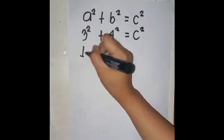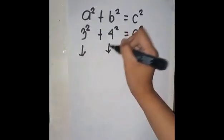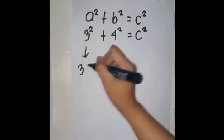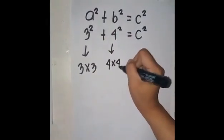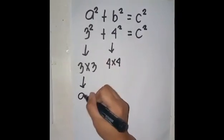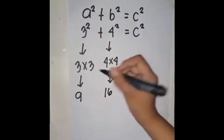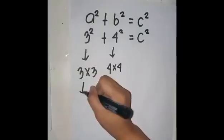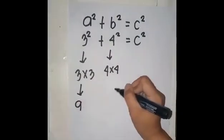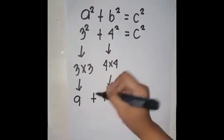Kung kaya't ang a squared ay magiging 3 squared at ang b squared naman ay magiging 4 squared. Para makuha natin ang sagot, kukunin muna natin ang value ng bawat legs. So the first leg is 3 squared which is 3 times 3 and the answer is 9. And the second leg is 4 times 4 and the answer is 16. Kung kaya't ang equation ay magiging 9 plus 16 equals c squared.